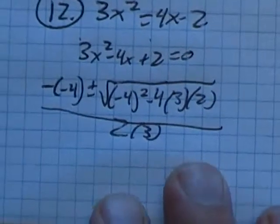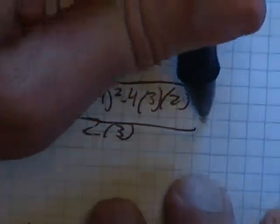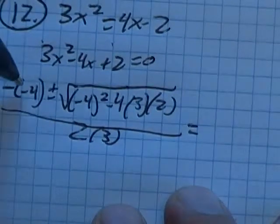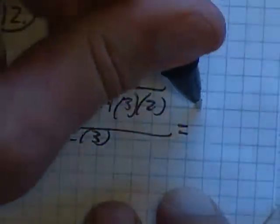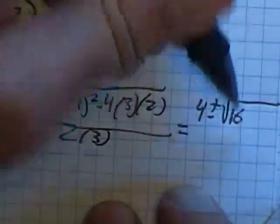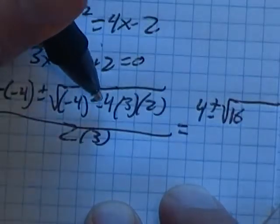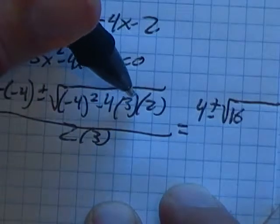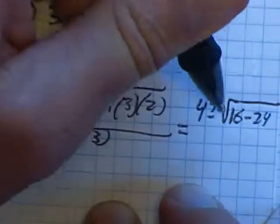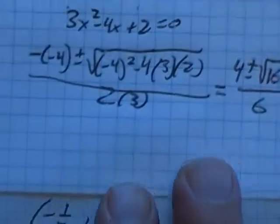Alright and now I've got me some arithmetic to do. So, let's see, negative negative 4 is positive 4. Negative 4 squared is 16, minus 4 times 3 is 12, times 2 more is 24. All over 6. And I'll keep going from there.